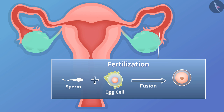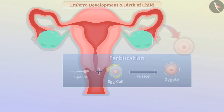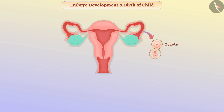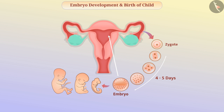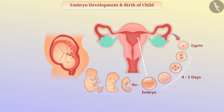Fertilization produces a fertilized egg which is called a zygote. The zygote divides several times, and in 4 to 5 days it forms a ball-like structure called an embryo. This embryo attaches to the uterine wall where it develops. A disc-like structure is developed in the wall of the uterus which is called the placenta. The placenta is attached to the embryo by the umbilical cord.